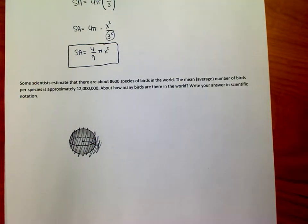Some scientists estimate that there are about 8,600 species of birds in the world. The mean or the average number of birds per species is approximately 12 million. So, in other words, for each species, you have about, like, say, robins, maybe 12 million robins, 12 million bluebirds, 12 million eagles, whatever. And the question is, how many birds are there in the world?